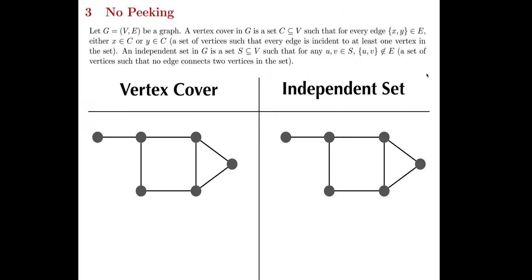For a vertex cover, you're trying to pick vertices such that you cover up all of the edges. If I select this vertex over here, that covers all of its adjacent edges. But this isn't a vertex cover yet because I have to cover all of the edges in the graph, including these ones. I could pick this one, but it's still not a vertex cover. I need to pick one more to cover this last edge. And this counts as a vertex cover. Notice that these three vertices are the only three needed to form the vertex cover.